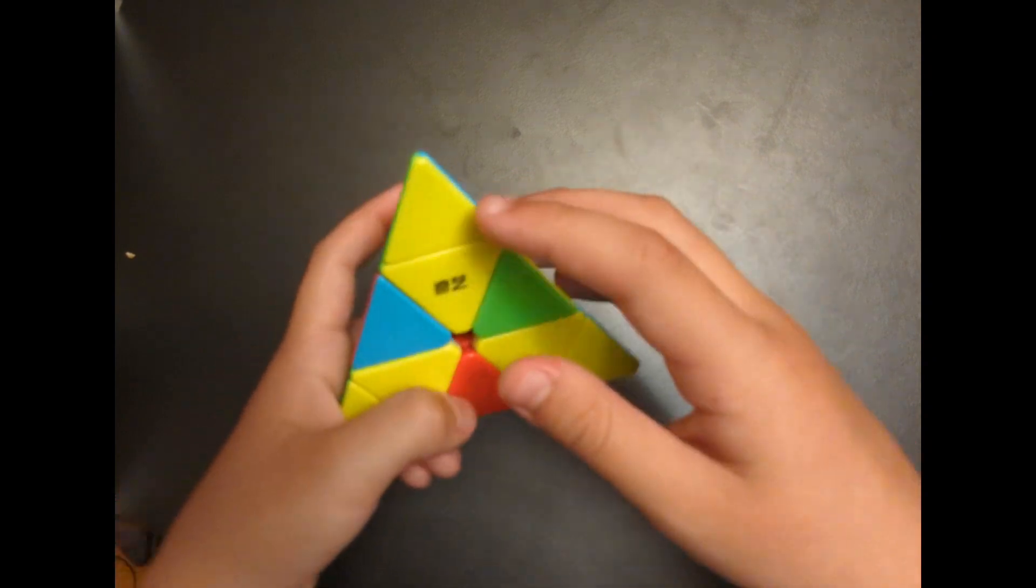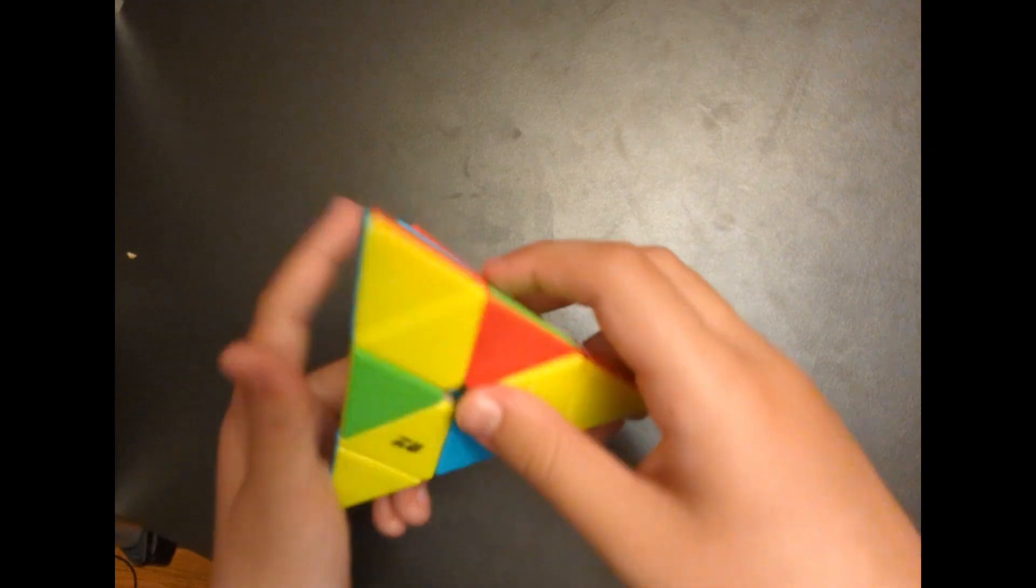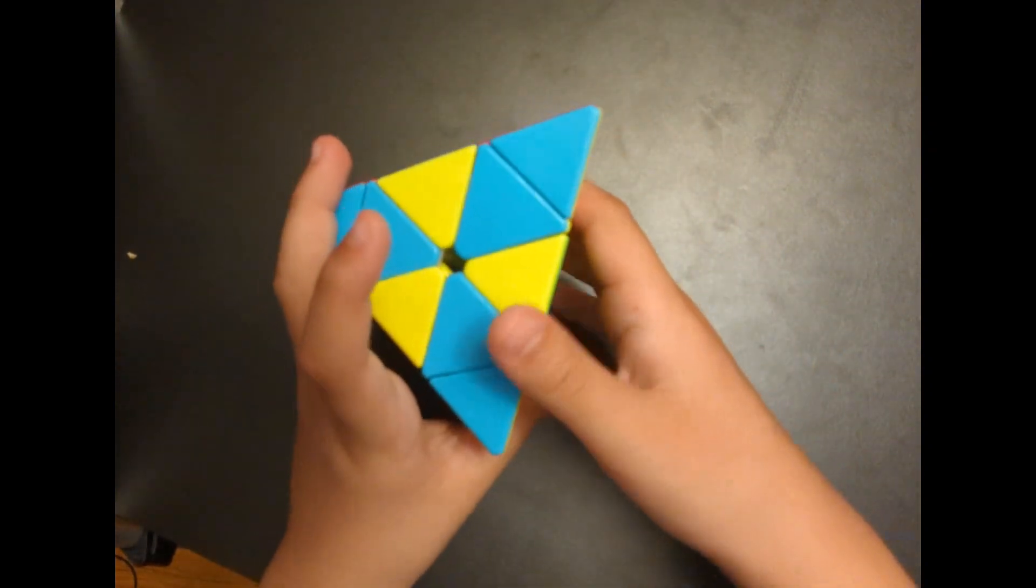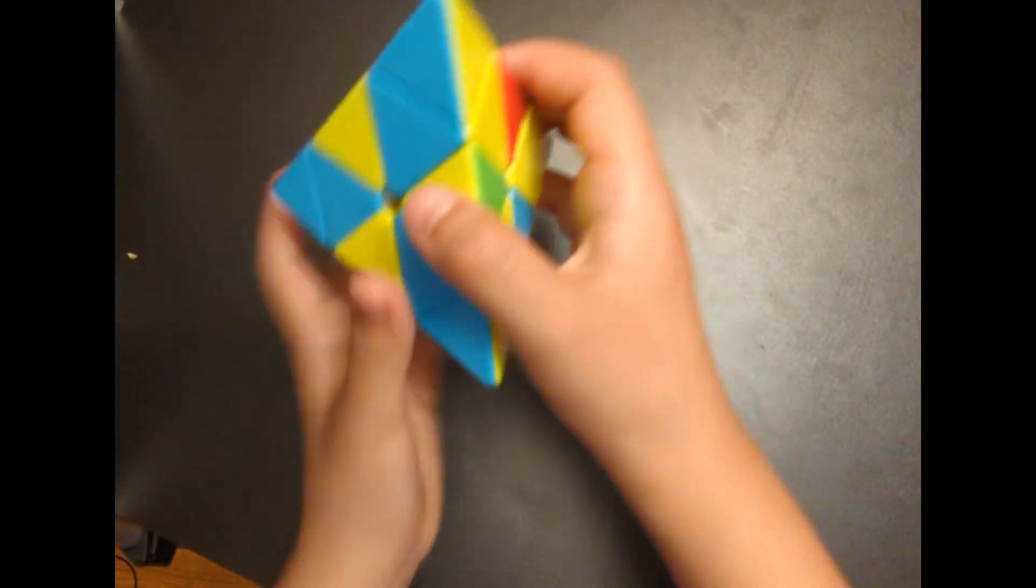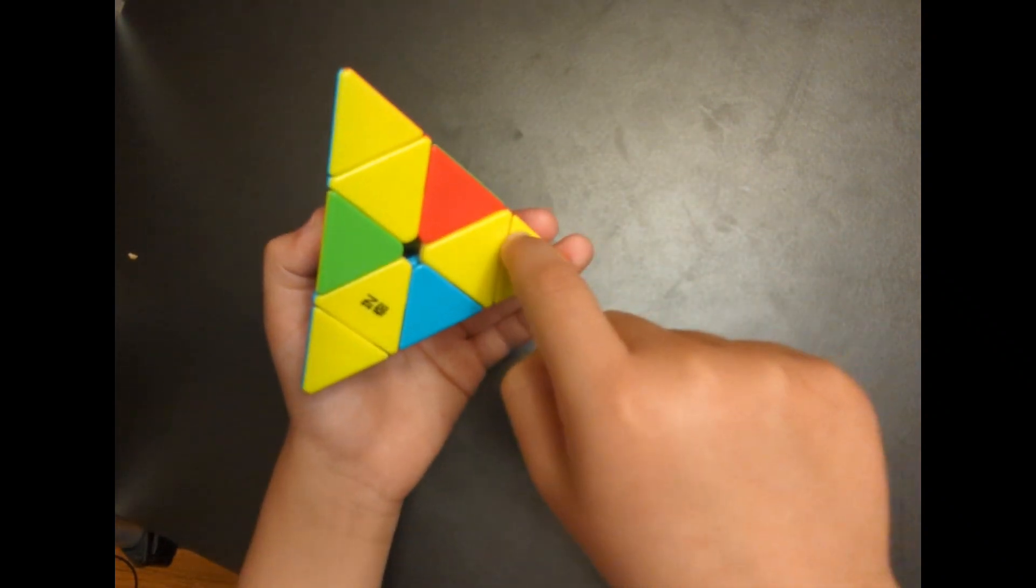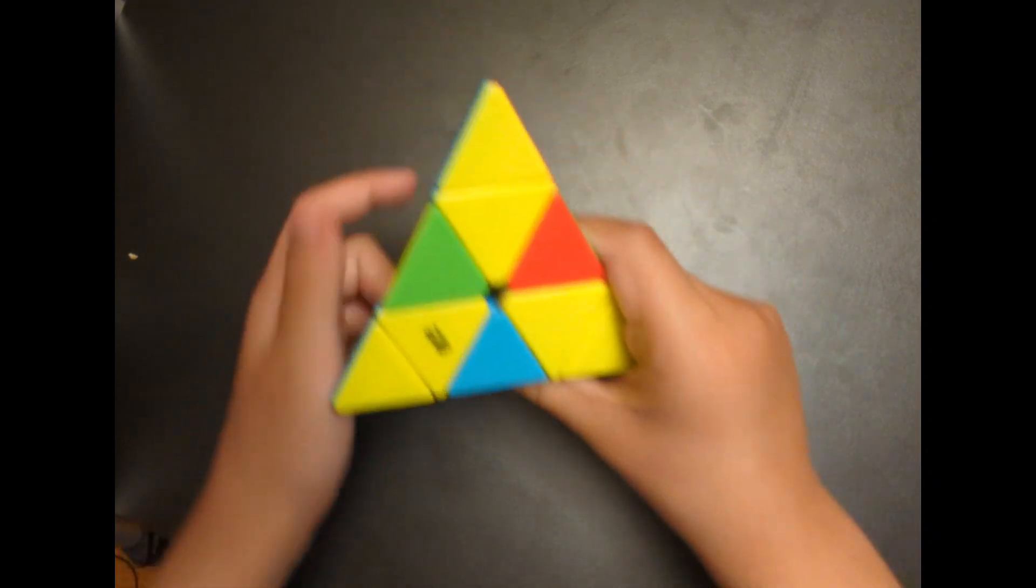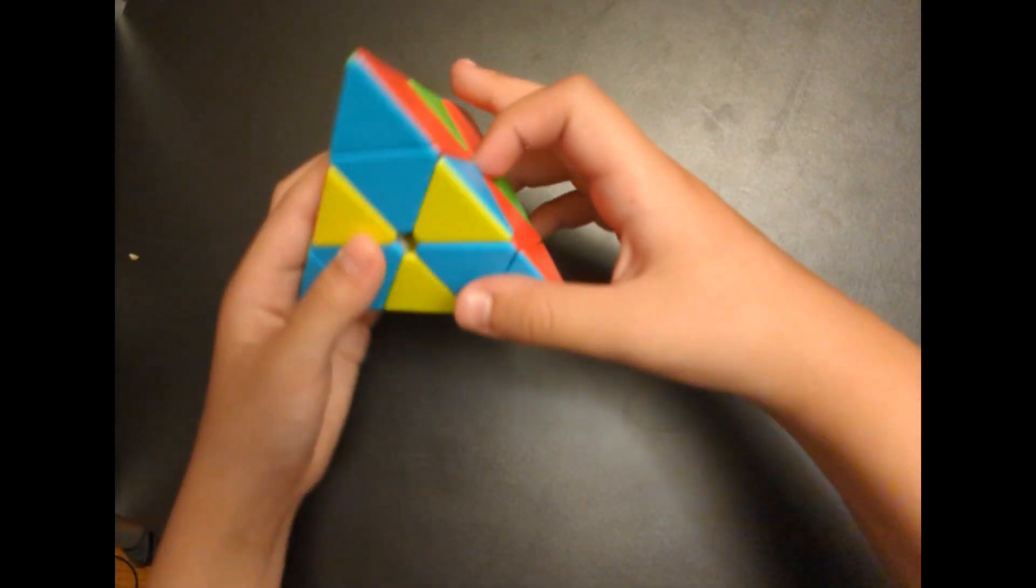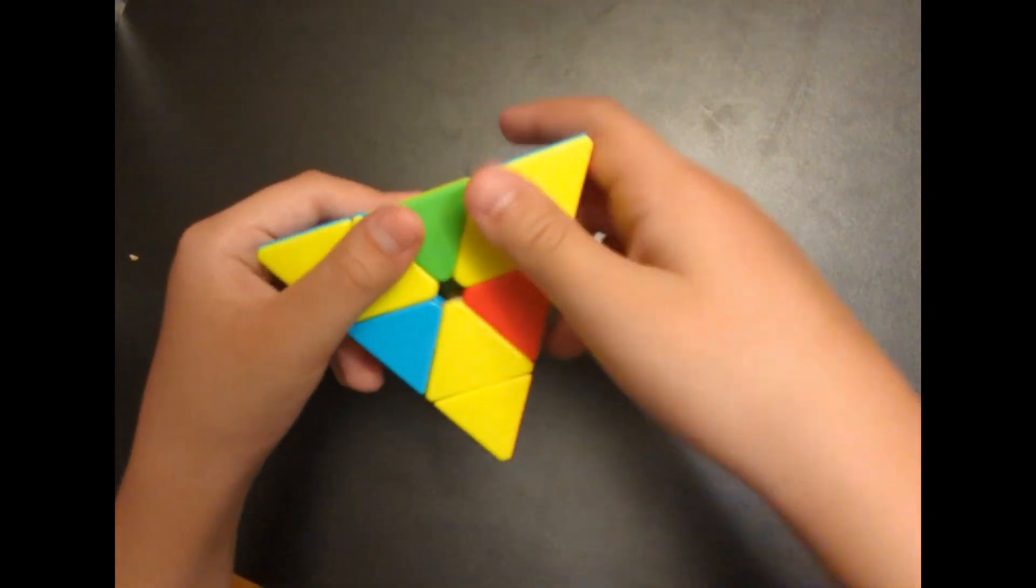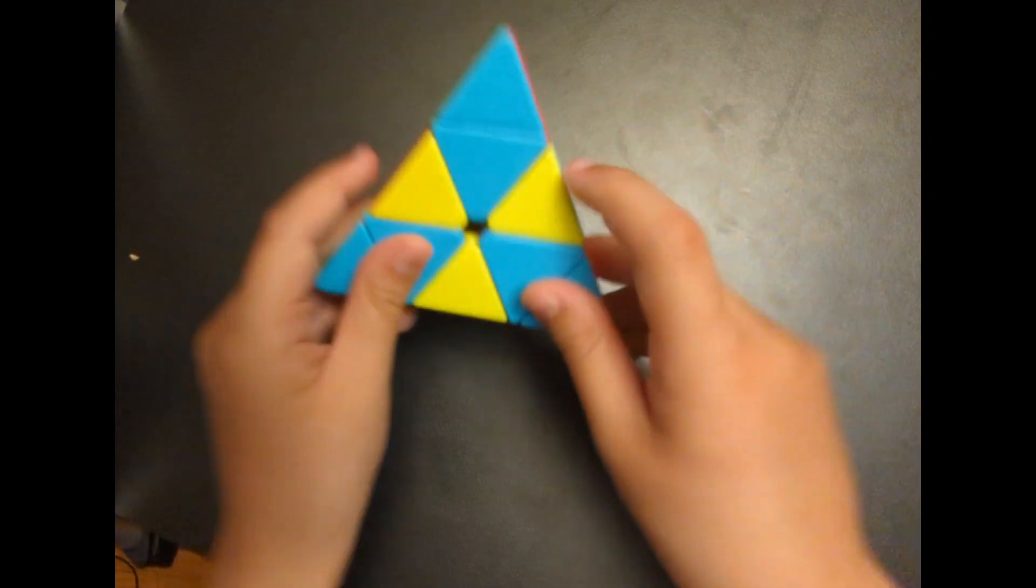And now, so the next step, once you've got all of them matching, I like to find yellow and do it. So what you want to do is make it like this, kind of like a triangle, or the toxic waste sign. Now that you've got it, you want to put that side to the bottom.